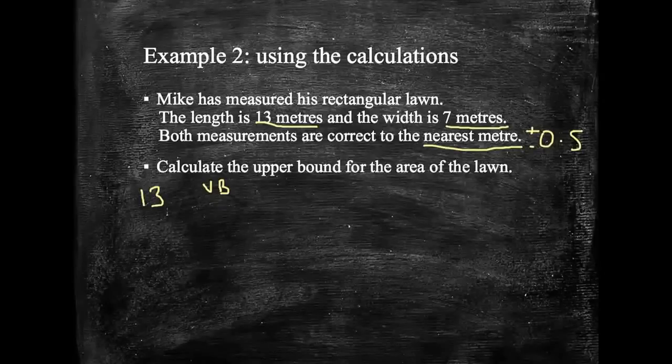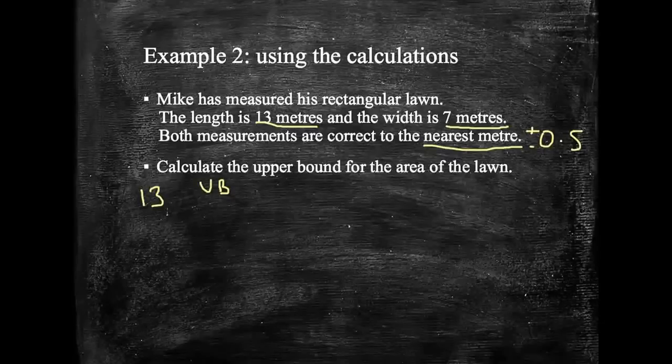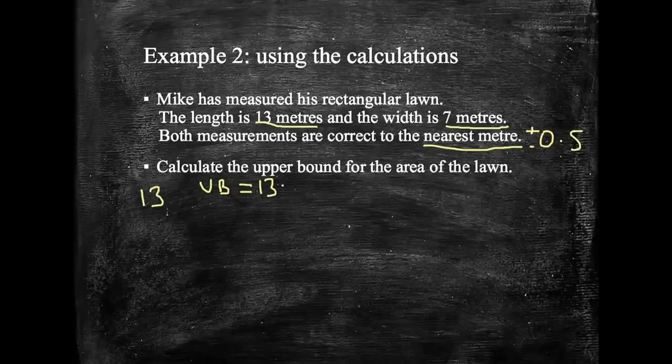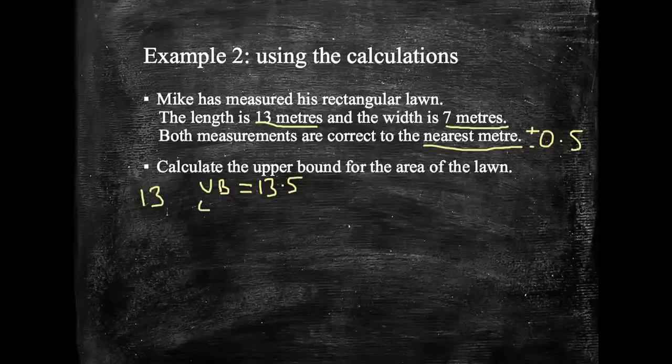So the upper bound, looks a bit like a U, a V, let's just rub that out, make it a U. Upper bound would be 13.5, and the lower bound would have been 12.5.